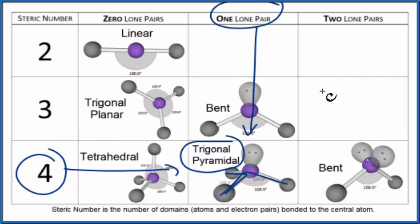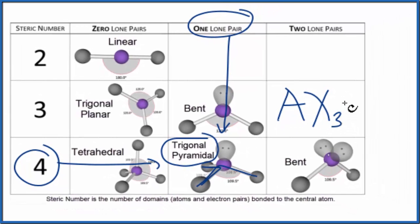We could also use the AXE notation. A, that's the central phosphorus atom. X, that's the number of atoms bonded. We have three iodine atoms bonded to it. And then E, that's the number of lone pairs. We had one lone pair. So you either memorize that this is trigonal pyramidal or if you're allowed, you look it up on a table.